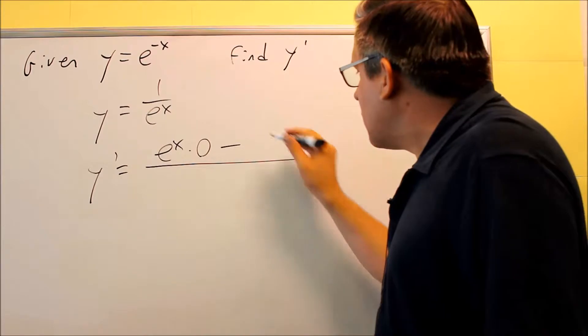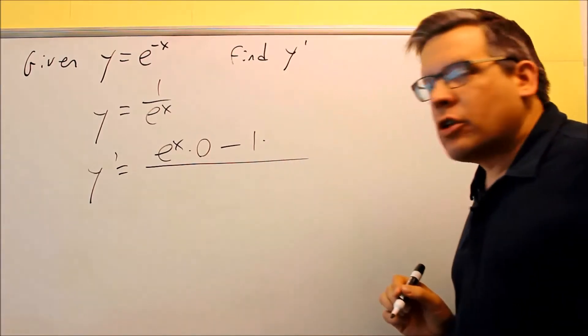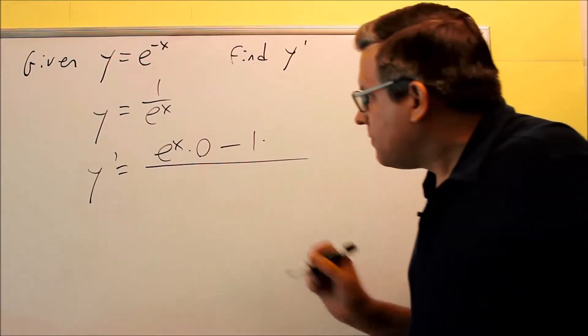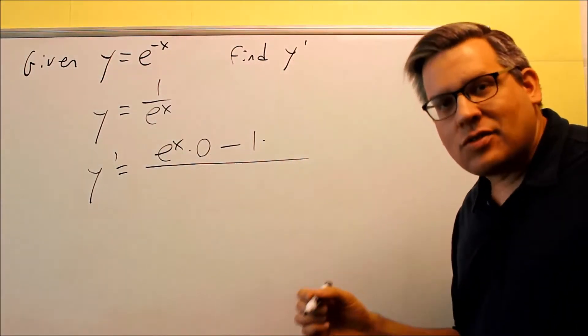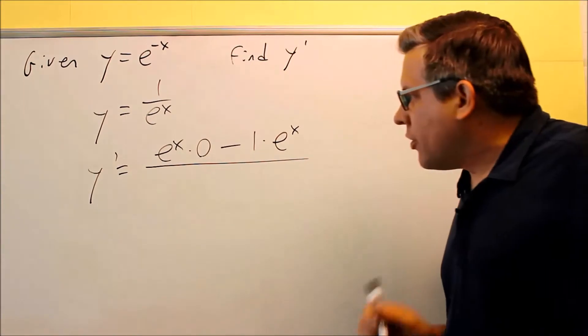We have a minus, minus the top thing, 1, and then we're going to do the derivative of the bottom. The derivative of the bottom, the derivative of e to the x, is e to the x. So we have that right there.